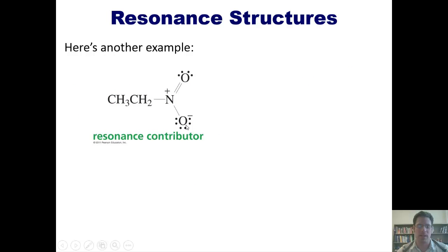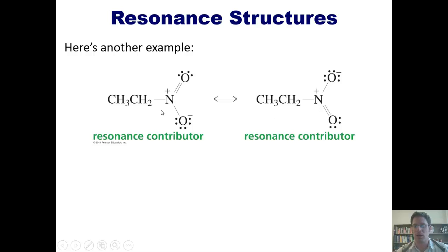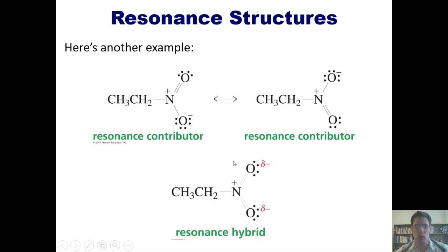This molecule here is called ethyl nitrate. If you take this negative charge on this oxygen — a formal negative charge caused by it having an extra set of lone pairs — you can imagine swinging these lone pairs down and closing to form a nitrogen-oxygen double bond. In doing so, the nitrogen would have 10 electrons around it, so you must push these electrons up onto the top oxygen, converting this into a nitrogen-oxygen single bond and giving that oxygen a formal negative one charge. These are two resonance contributors. This molecule actually exists somewhere in between these two and can be drawn as a resonance hybrid.